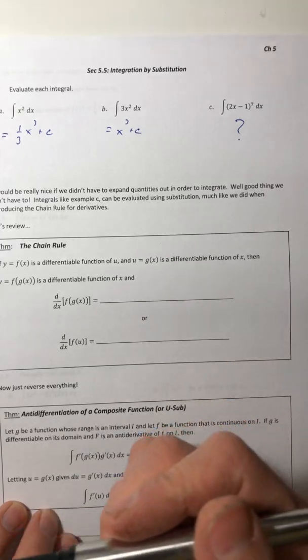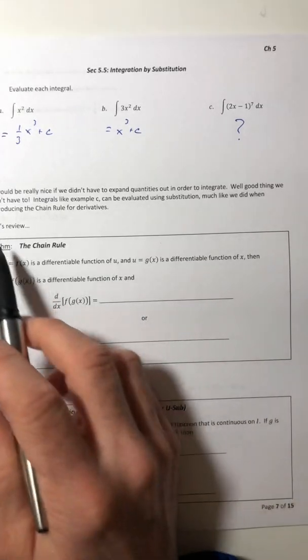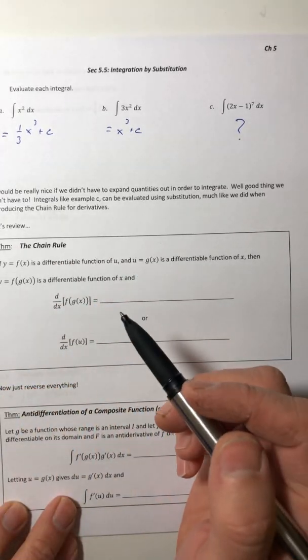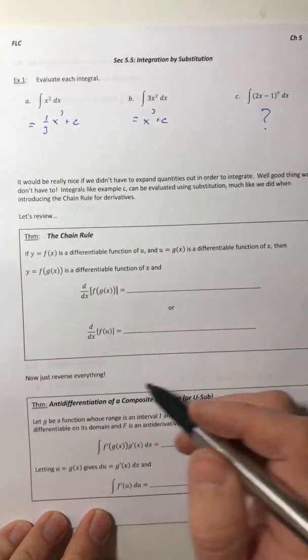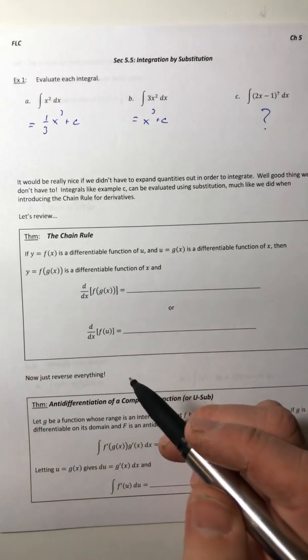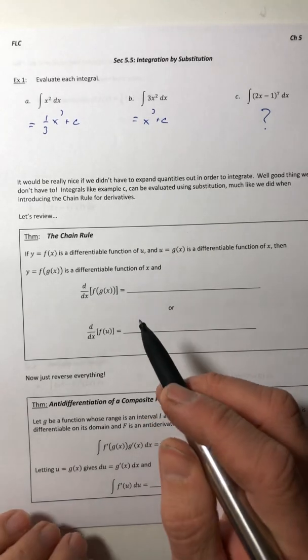Integrals like this example, you can evaluate them using substitution. And that method is a lot like what we did for when we introduced the chain rule for derivatives. Essentially that's kind of what we're doing, we're just sort of reversing derivatives that were found using the chain rule.